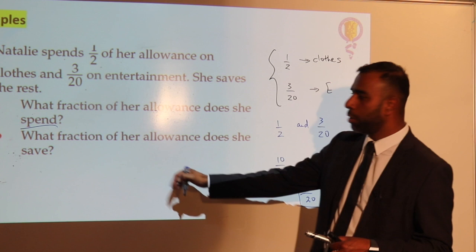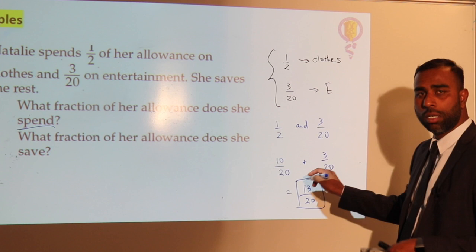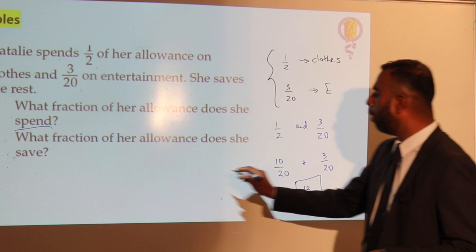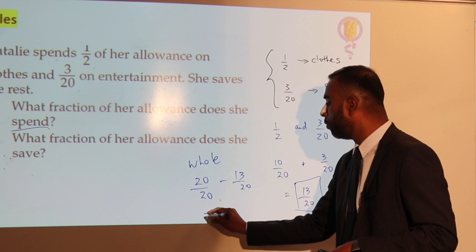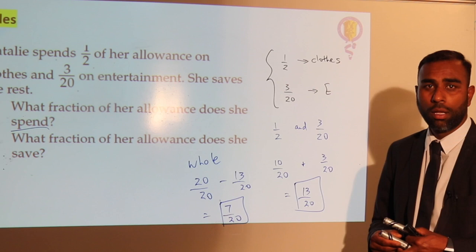The next part asks: what fraction of her allowance does she save? She's spending 13 over 20, so the rest of the allowance she's saving. As a whole, that fraction is 20 over 20. Take away the spending — therefore she's saving 7 over 20. That's example one.